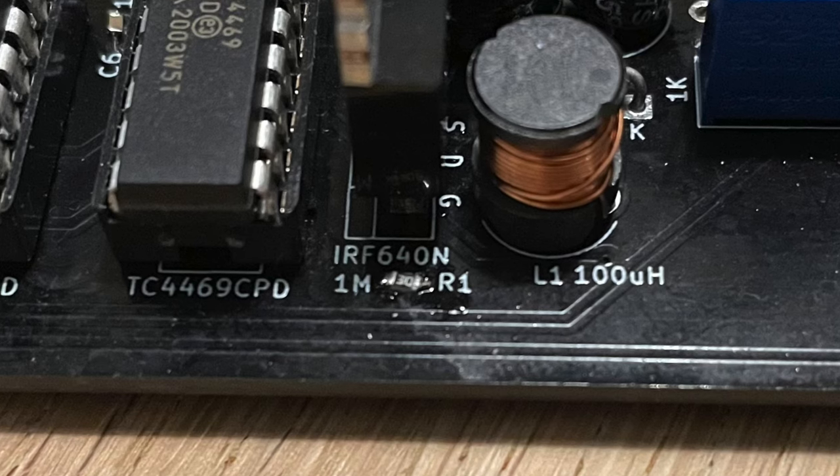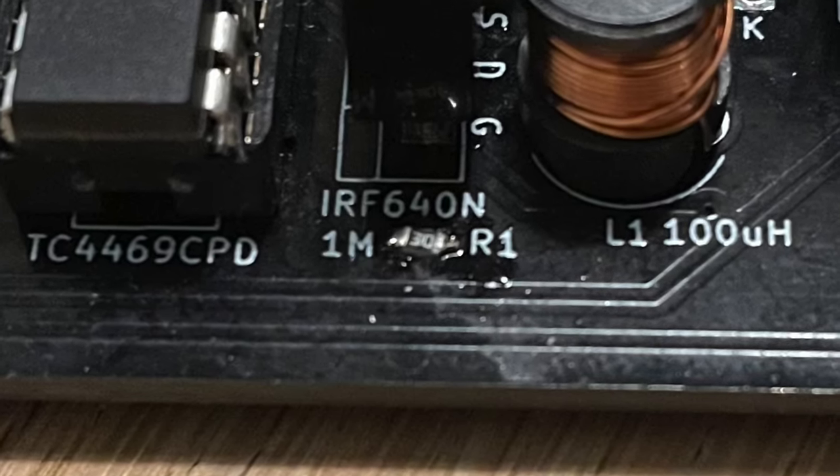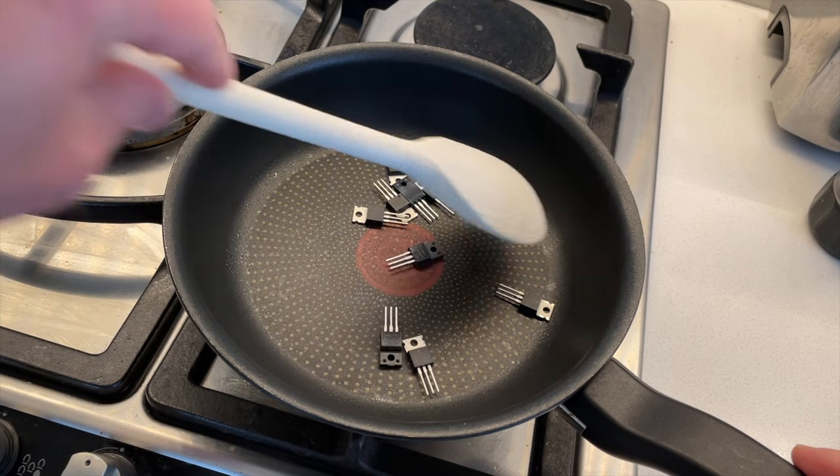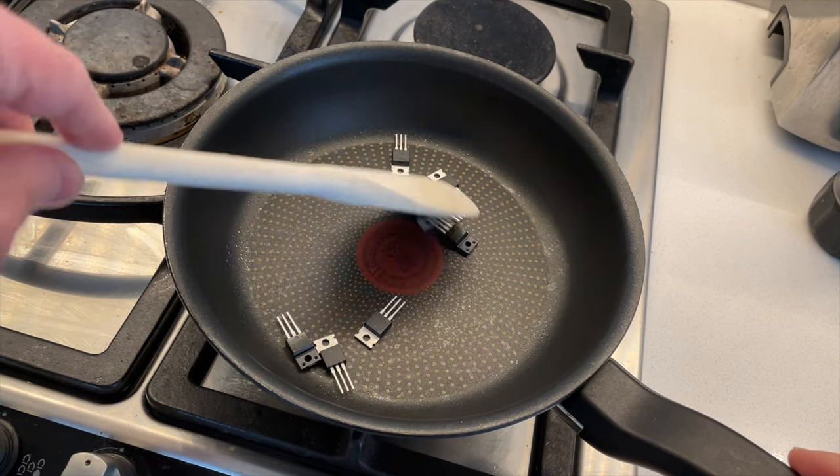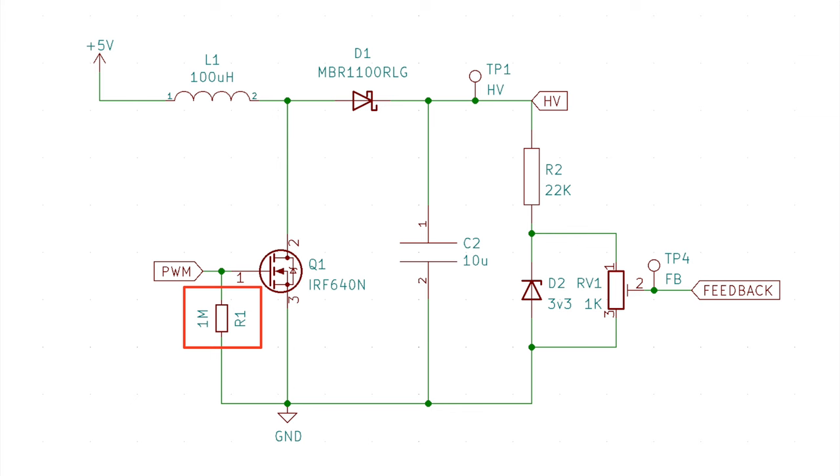One important thing that I forgot when I first powered up the circuit is this pull down resistor on the gate of the MOSFET. I almost cooked the MOSFET and the inductor as it was turning itself on and shorting the power supply to ground. I burnt my finger touching it so be careful. Always remember to include a pull down resistor on the gate of your MOSFETs.